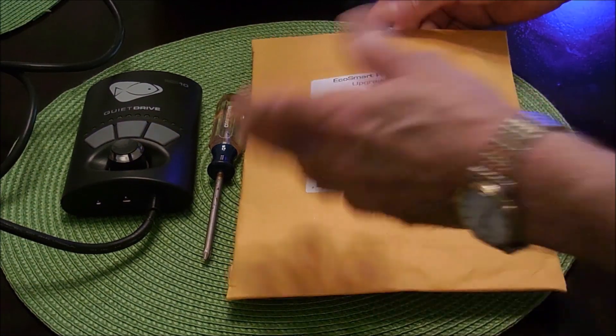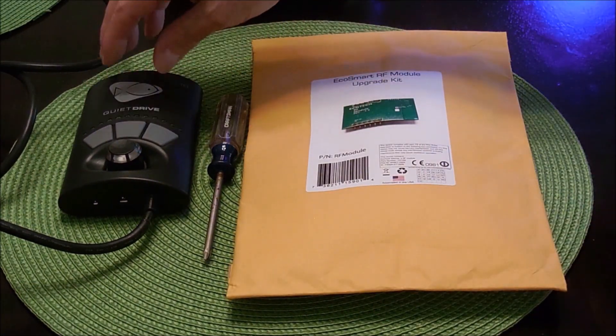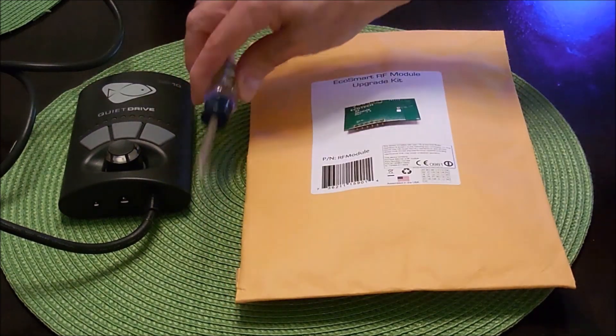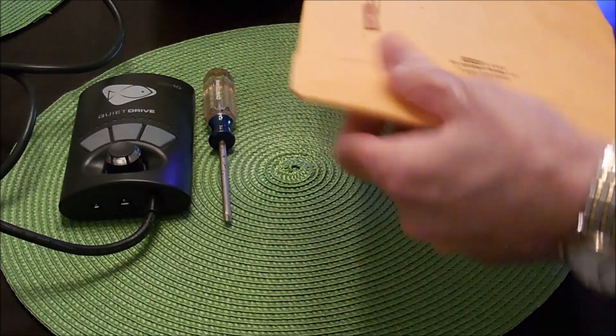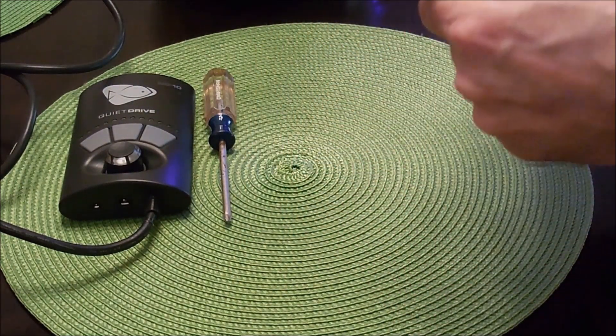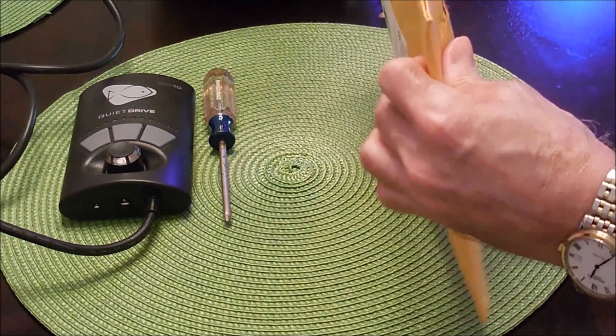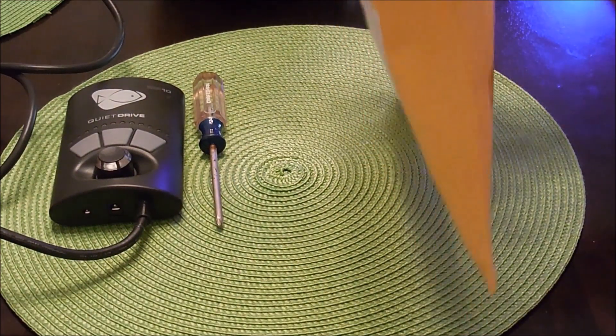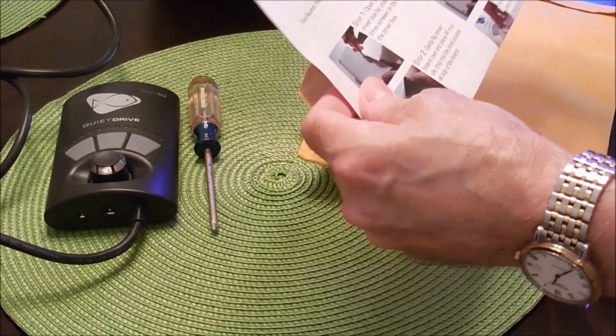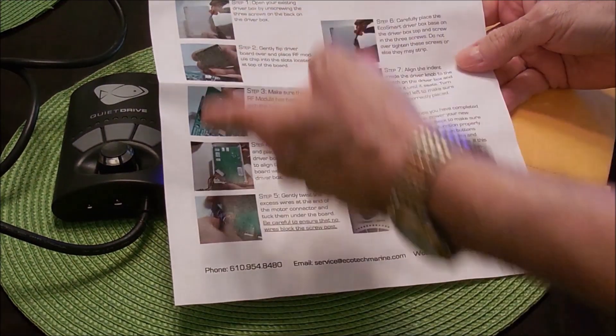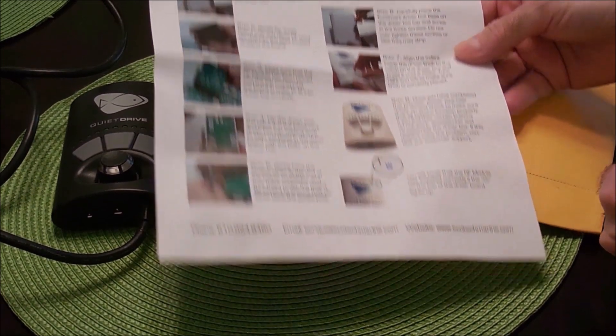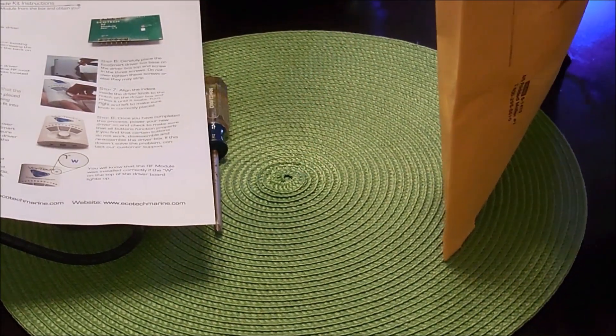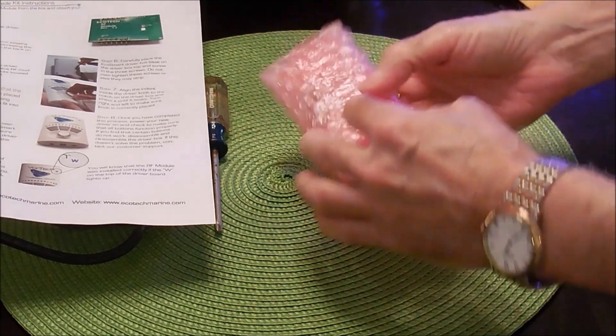Okay, and here we are at the dining room table. As you notice I have the quiet drive controller. All I need is a hex or phillips screwdriver and then the package. Let's go ahead and open it. We have a set of instructions here that shows you with pictures how to actually do the modification. Put this aside and here's the RF module.